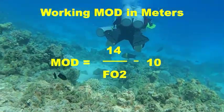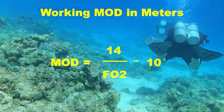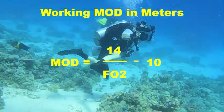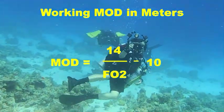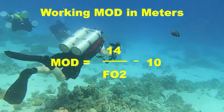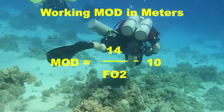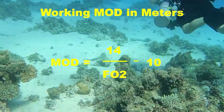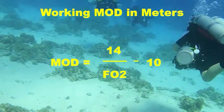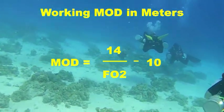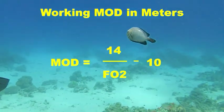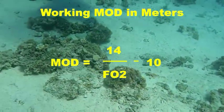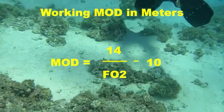Here is the formula for calculating the working maximum operating depth in meters. Note that the fraction of O2, the FO2, is a number between 0 and 1.0 — it is not a percentage. So if you were using air as a bottom gas, you would not use 21%; you would use 0.21. The other important thing is that you take the 14 and divide by the FO2 before you subtract the 10. If you do not make the calculations in that order, you will receive incorrect results.